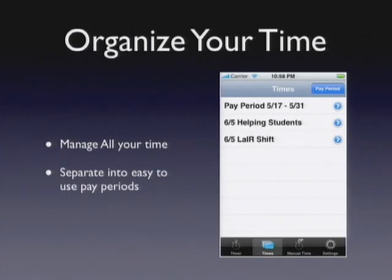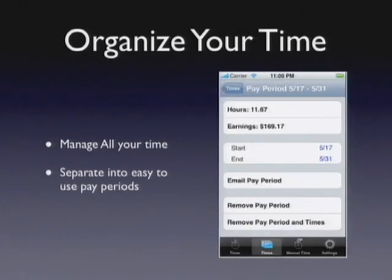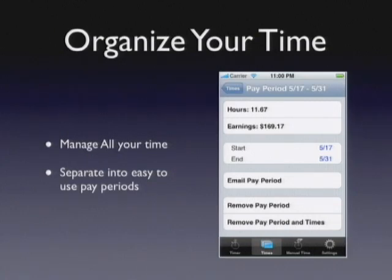It also lets you manage your time. You have your current working things and pay periods — I get paid every two weeks, so within each pay period you can get all the details. For example, in May I worked for 11 hours. A great feature is emailing the pay period — it actually emails a CSV so you can just copy and paste it right into Excel and import it into Kronos or however you want to get paid.